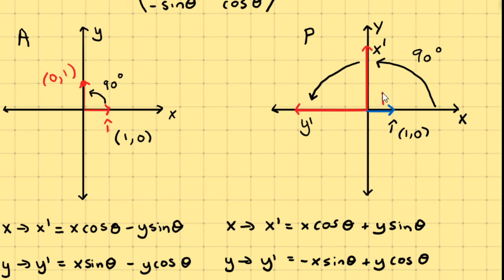but because the coordinate system has rotated 90 degrees, this new x-axis, it's 0 along this x-axis. It doesn't go up this new x-axis at all.